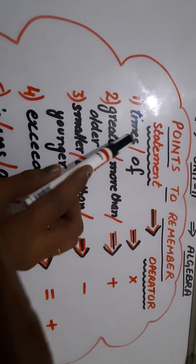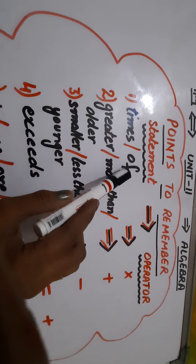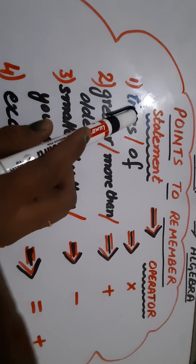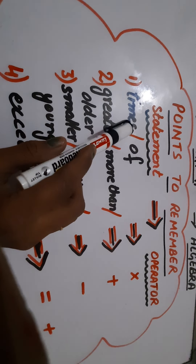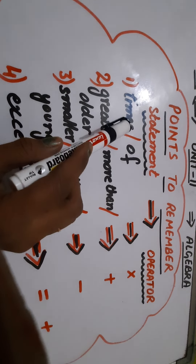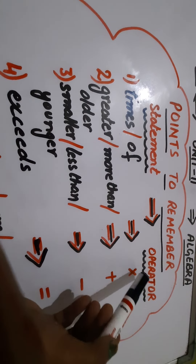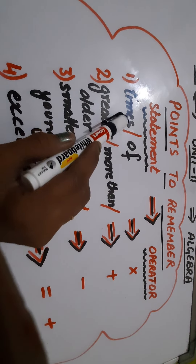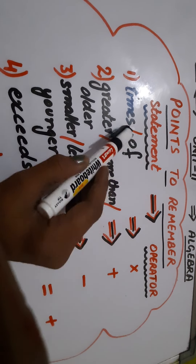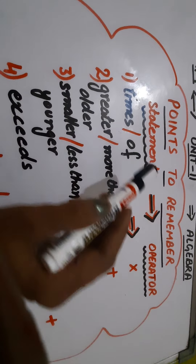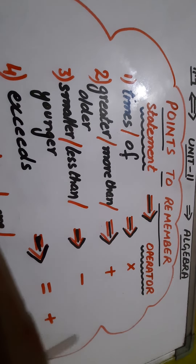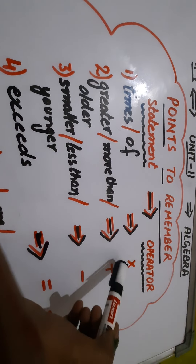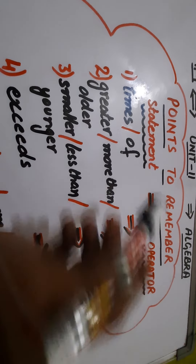In mathematics, few English words have different meanings. The very first word is 'times'. In mathematics, for the word 'times' or 'of', we use the multiply operator. For example, 'three times' — so in that, what will come? Three multiplied by.